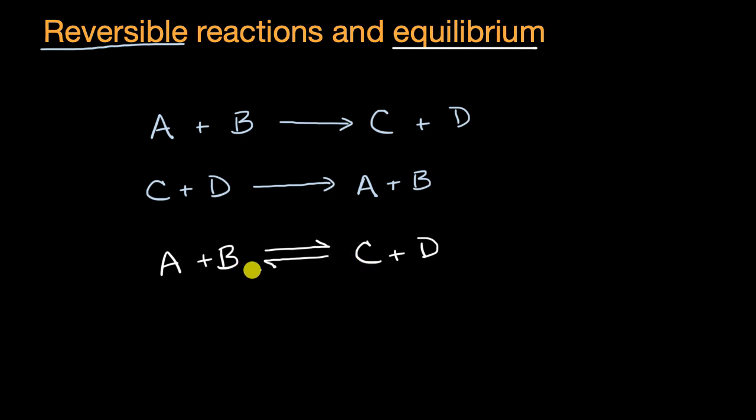Now, once you're at equilibrium, it doesn't mean that the reactions stop. It just means that the rate of going from A plus B to C plus D is the same as the rate of going from C plus D to A plus B.